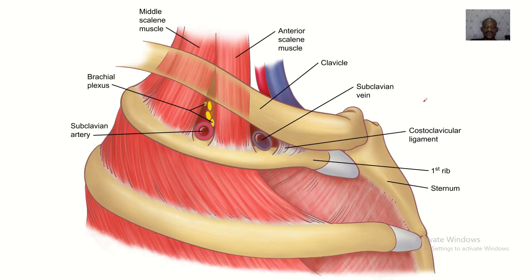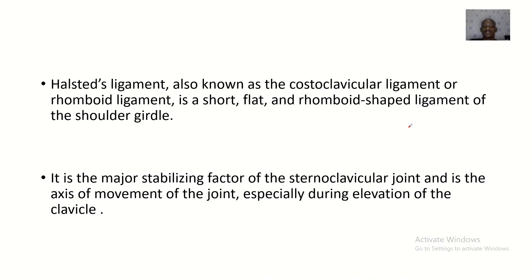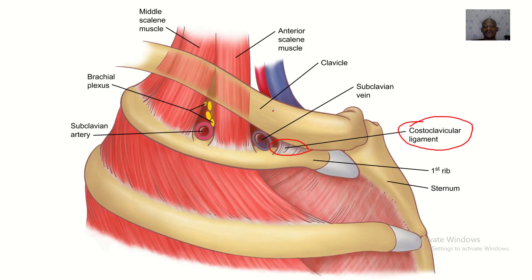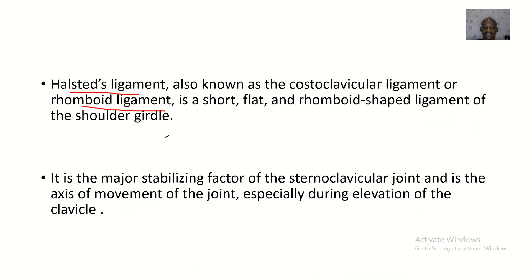This is the costoclavicular ligament — it sits under the clavicle, running from the clavicle to the first rib, which is a costal rib. The Halstead ligament, or costoclavicular ligament, is also called the rhomboid ligament. It is a short, flat, rhomboid-shaped ligament of the shoulder. You can see how flat and short it is. It is the major stabilizing factor of the sternoclavicular joint.